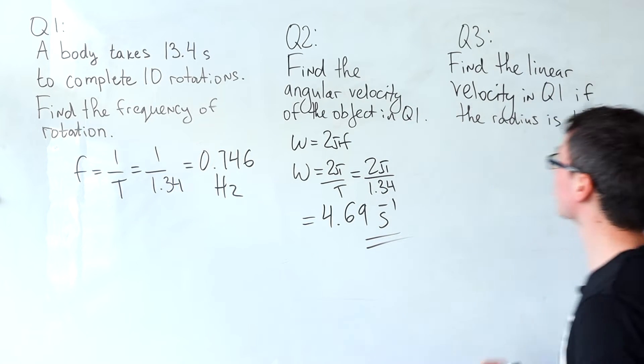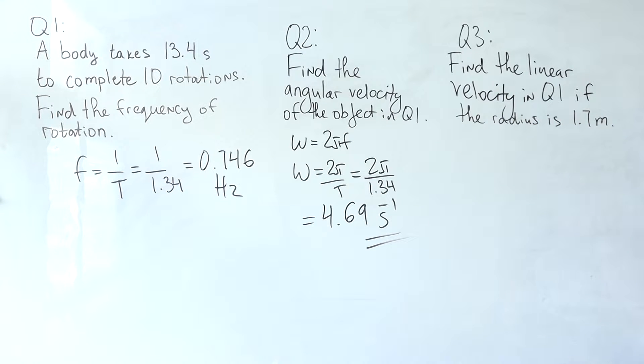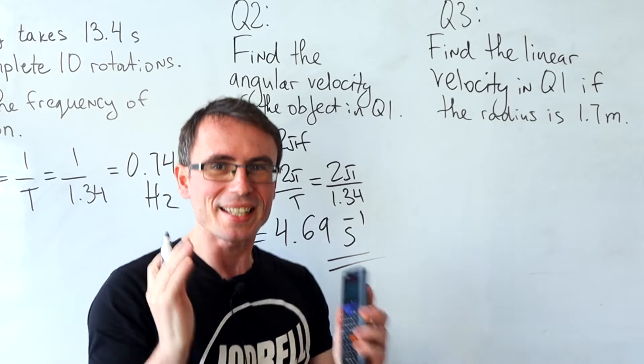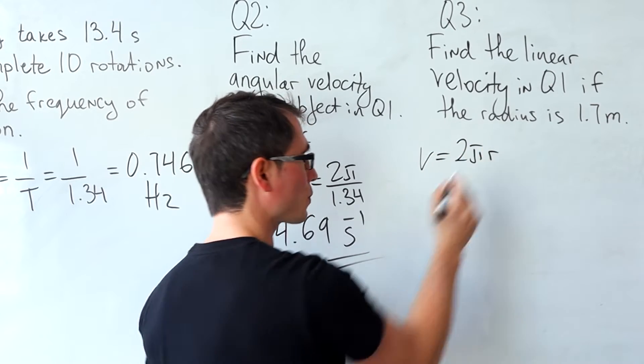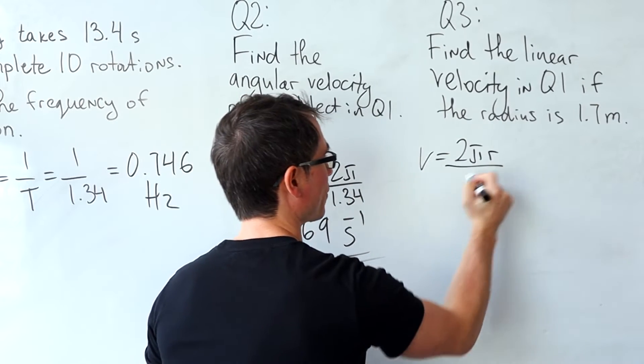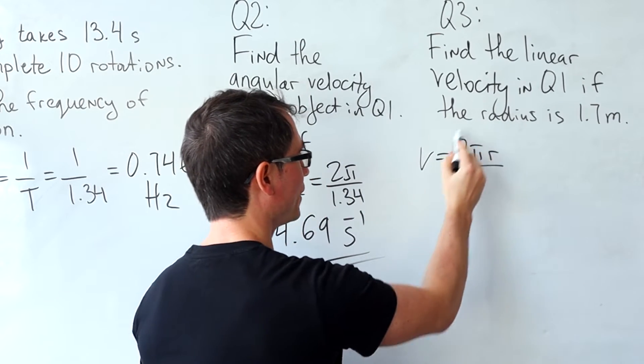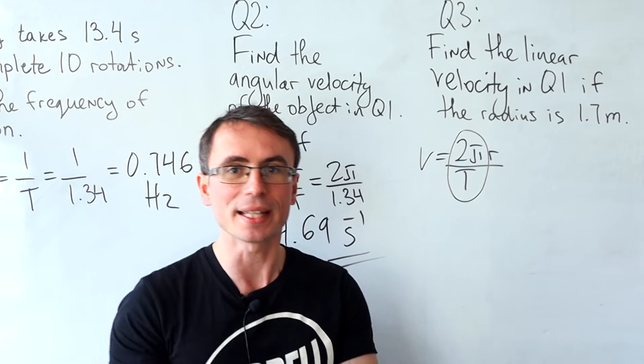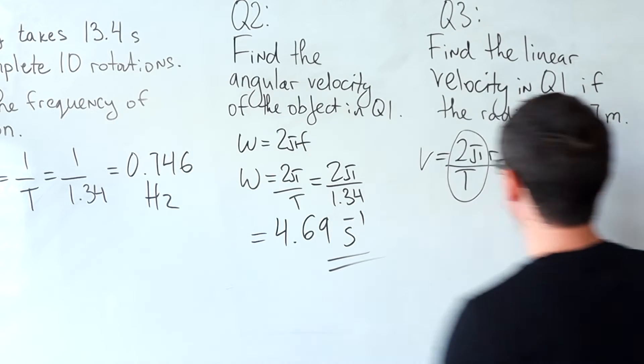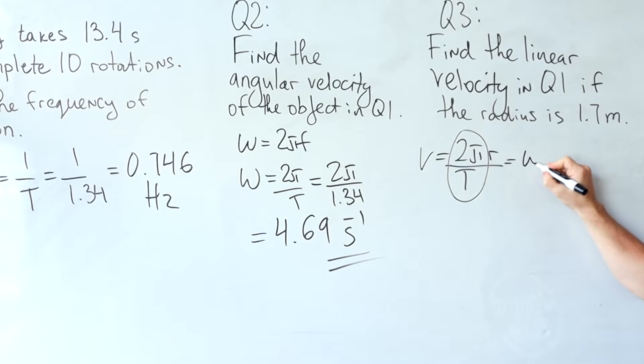Moving on to question three: find the linear velocity in question one if the radius of rotation is 1.7 meters. Now remember linear velocity is given by the total distance which is the circumference of the circle divided by the time. This here, 2π over t, is actually the angular velocity so we can also rewrite this equation as omega r. This is where it actually comes from.